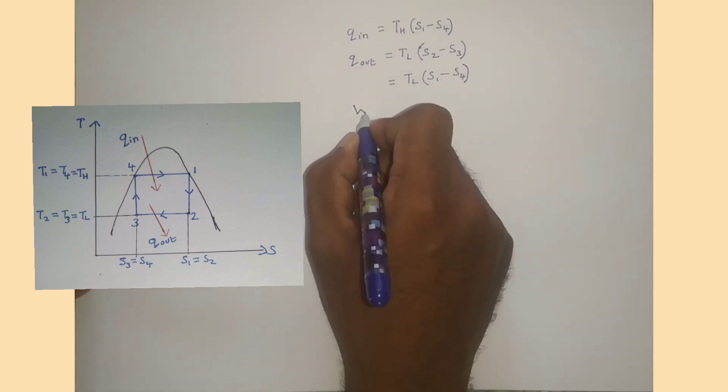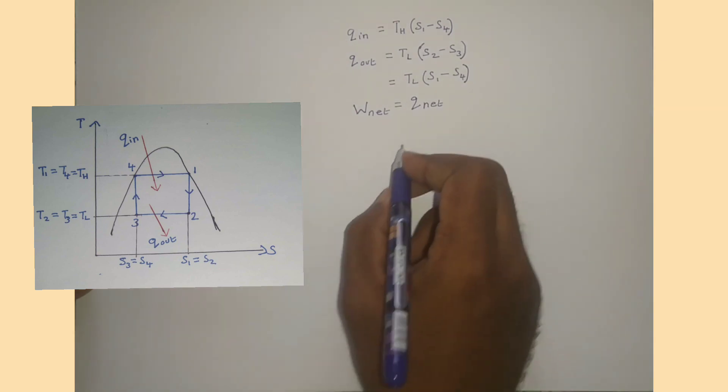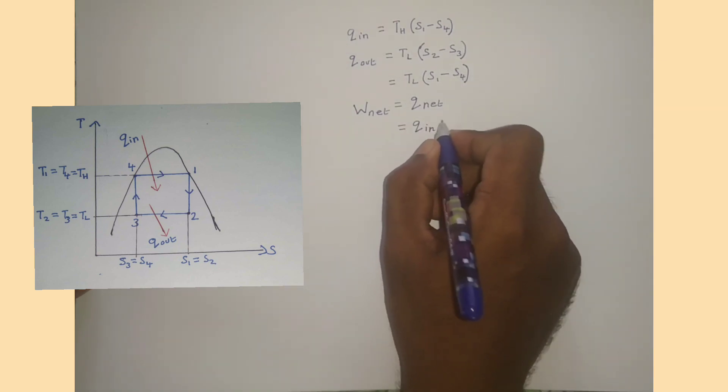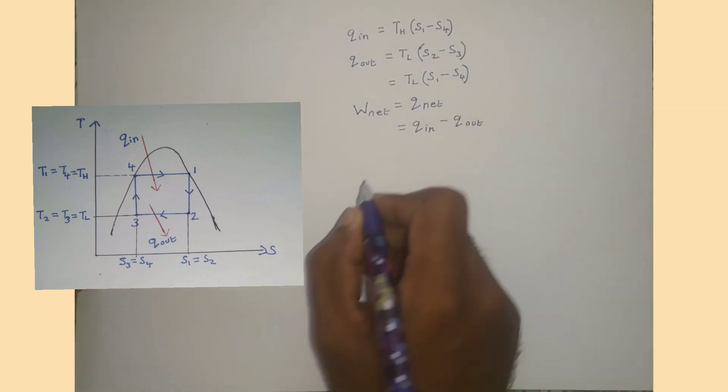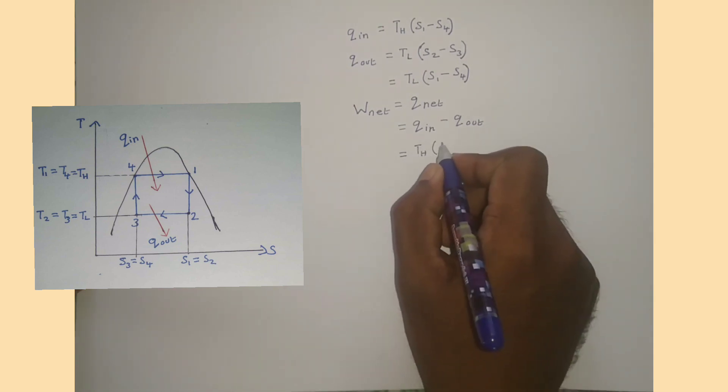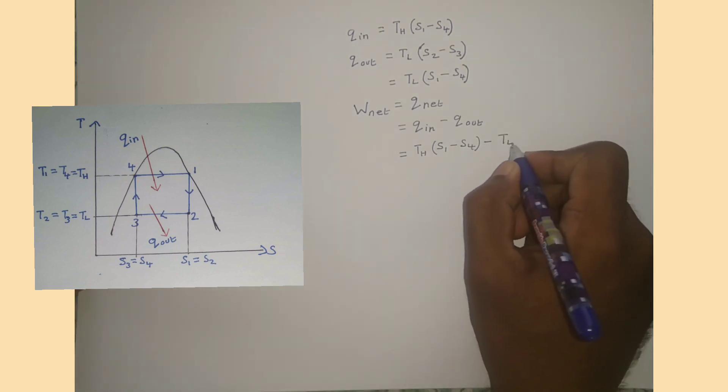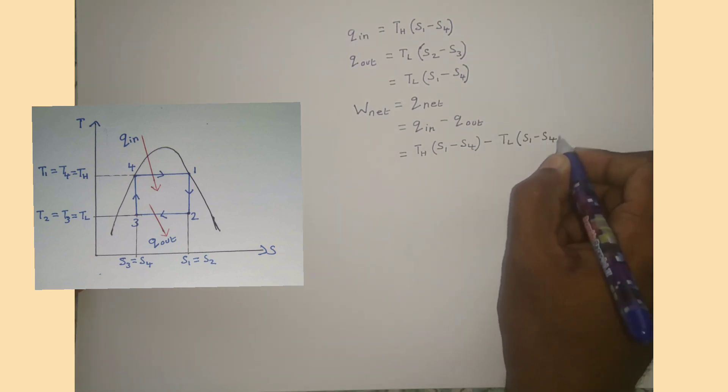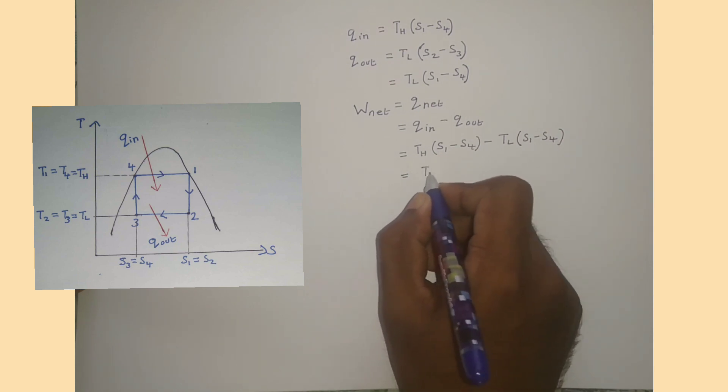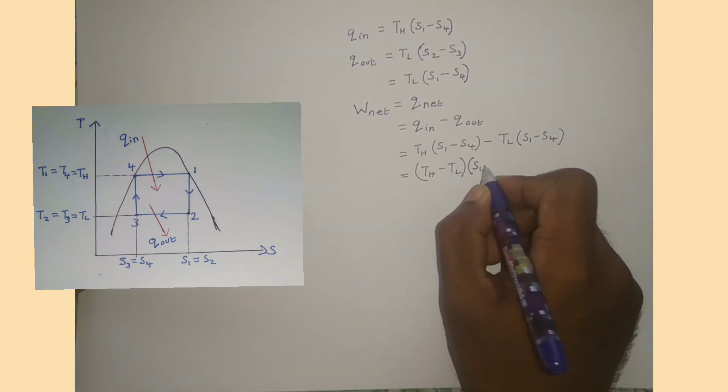According to the first law of thermodynamics, we can write W net equals Q net, that is W net equals Q in minus Q out. That is TH times (S1 minus S4) minus TL times (S1 minus S4), which equals (TH minus TL) times (S1 minus S4).